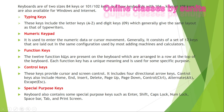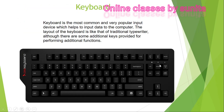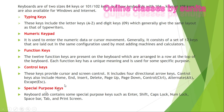The 12 function keys are arranged in a row at the top of the keyboard; each function key has a unique meaning and is used for a special purpose. Control keys provide cursor and screen control — they include the four arrow keys, the Control key, Home, Insert, Delete, Page Up, Page Down, and the Escape key. Special purpose keys include Enter, Shift, Caps Lock, Number Lock, Space Bar, Tab, and Print Screen.